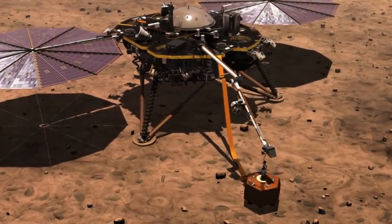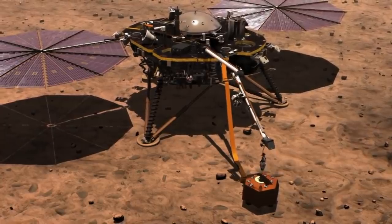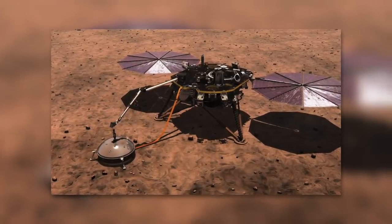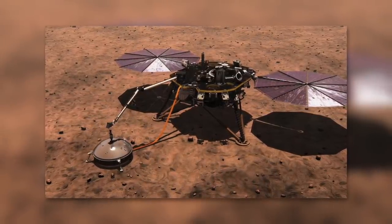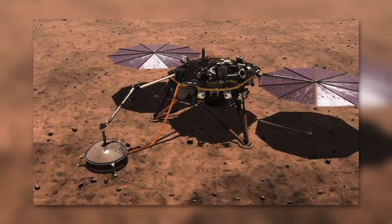NASA's InSight program is a lander that studies the surface of Mars. It is the first project of its kind worldwide. In addition to sensors for measuring wind and air pressure, the lander also has a seismometer, a heat flow probe, and a magnetometer.